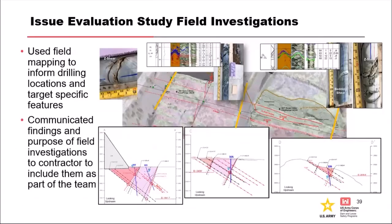We took that map developed from mapping and plotted sections and targeted borings. These are some of the sketches - we kind of messed around with this a lot. We went through and asked: do we want to do vertical? Are there some angles? What angle do we want to go at for some of these? How deep do we want to go? What's our target?